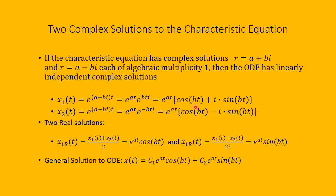Remembering Euler's formula on these e to the plus or minus bit terms, we can write x1 as e to the at times the quantity cosine bt plus i sine bt, and x2 of t as e to the at times the quantity cosine bt minus i sine bt. These are still complex solutions, but adding them and dividing by 2 gives the real solution e to the at cosine bt. Subtracting and dividing by 2i gives another real solution, e to the at sine bt. So the general solution, when the characteristic equation has two complex solutions, is x of t equals c1 e to the at cosine bt plus c2 e to the at sine bt.